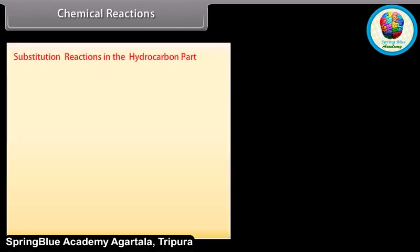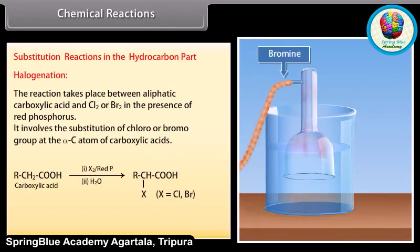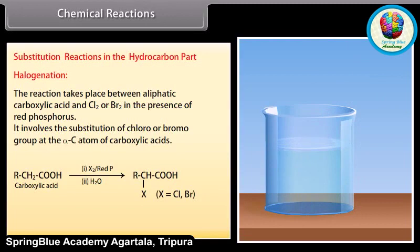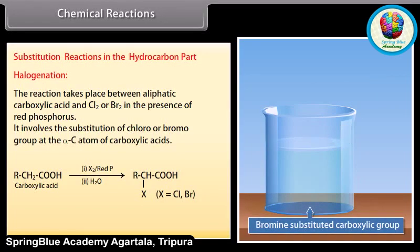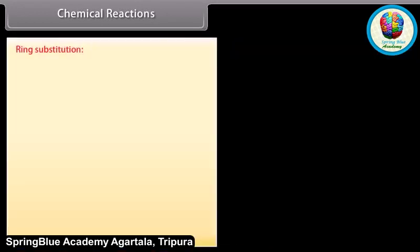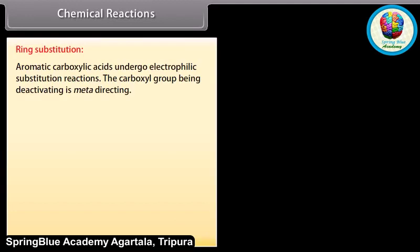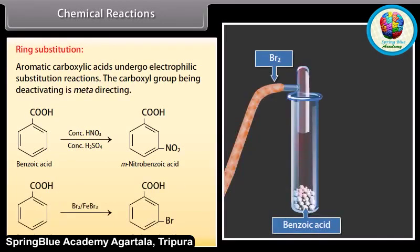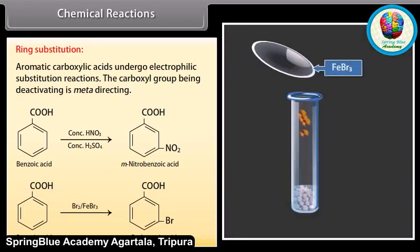Substitution reactions in the hydrocarbon part — halogenation: the reaction takes place between aliphatic carboxylic acid and chlorine or bromine in the presence of red phosphorus. It involves substitution of a chloro or bromo group at the alpha carbon atom of carboxylic acids. The reaction is known as the Hell-Volhard-Zelinsky reaction. Ring substitution: aromatic carboxylic acids undergo electrophilic substitution reactions; the carboxyl group, being deactivating, is meta-directing. On adding concentrated nitric and sulfuric acid to benzoic acid, it is converted to meta-nitrobenzoic acid. On adding bromine and ferric bromide to benzoic acid, it is converted to meta-bromobenzoic acid.